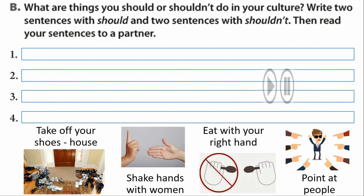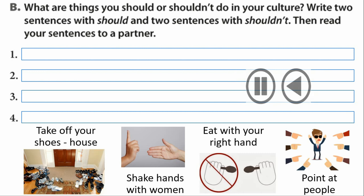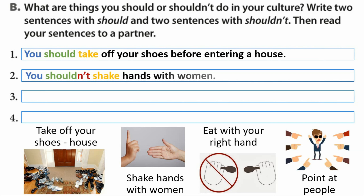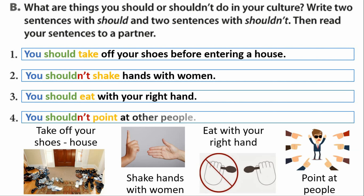Here are some examples. You should take off your shoes before entering a house. Number two, you shouldn't shake hands with women. Three, you should eat with your right hand. And number four, you shouldn't point at other people.